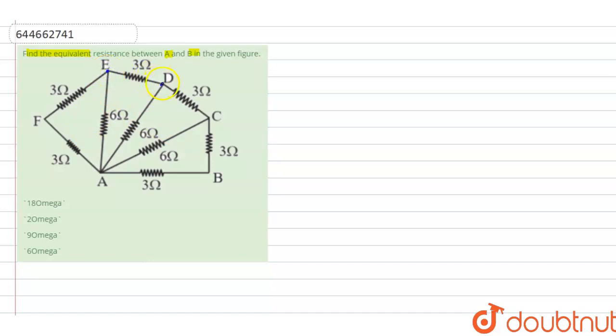So basically we'll first find the resistances between AE, AD, and AC. All right, so let's look at AE first. Okay, so concentrate on AE.